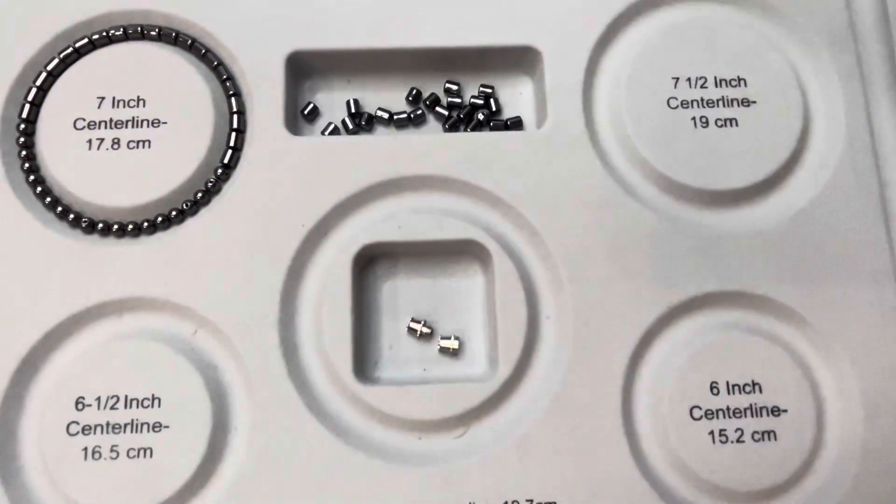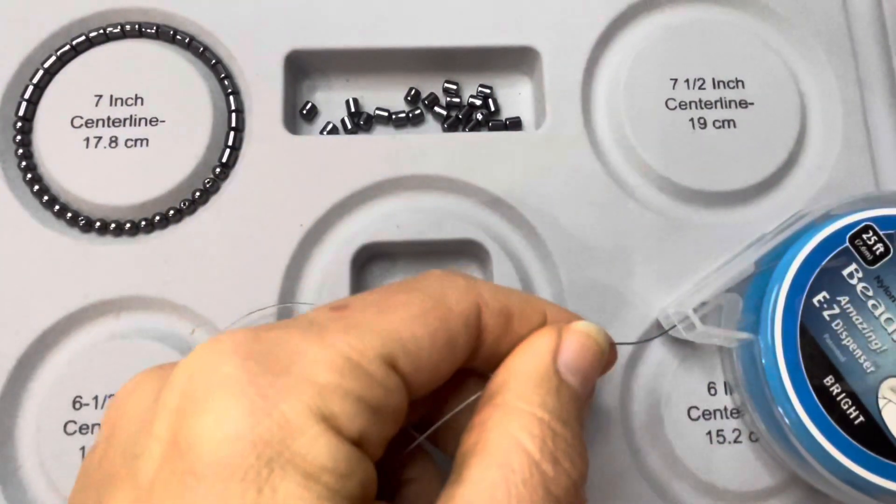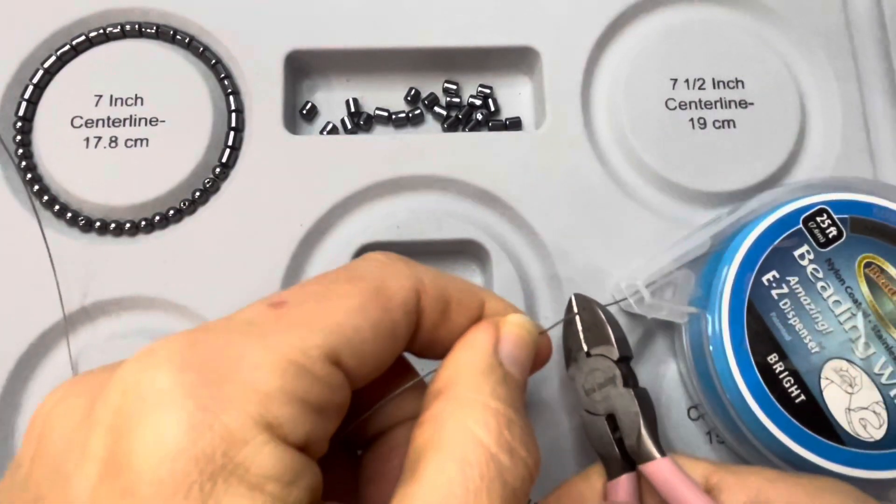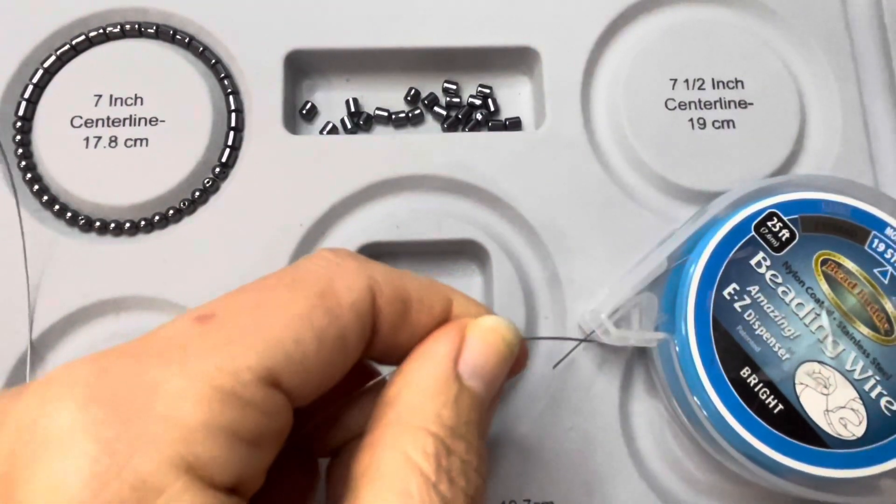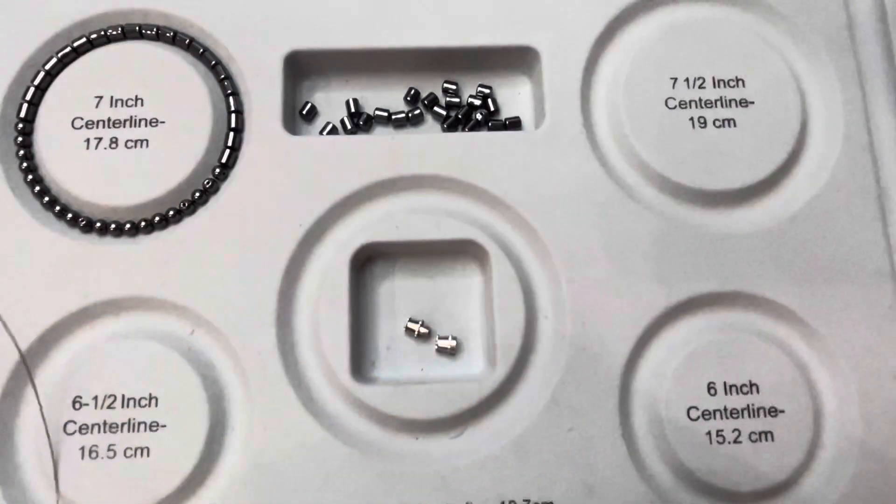We're going to need some wire, beads of your choice, and a barrel clasp. Let's start by cutting the wire. I would say grab yourself about a 9-inch piece.